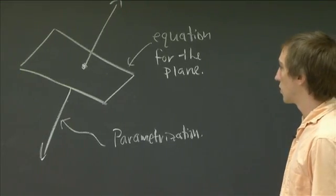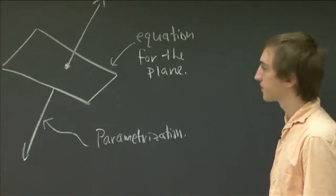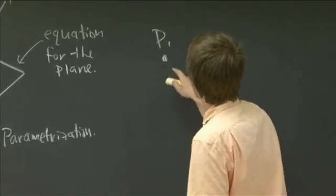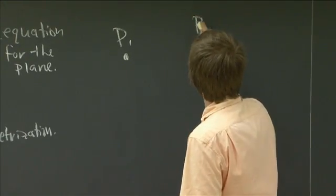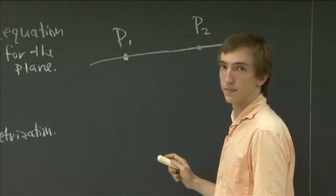So why don't we get started first with parametrizing the line. The general kind of picture here is we have a point P1 in space, and we have another point P2 in space, and we want to parametrize the line which goes between them.